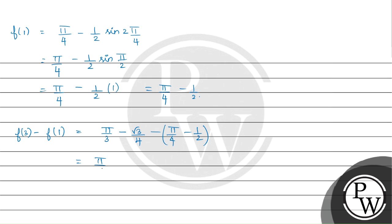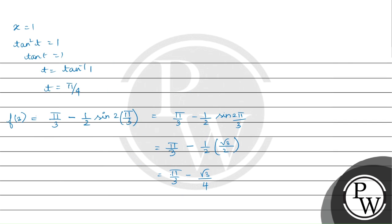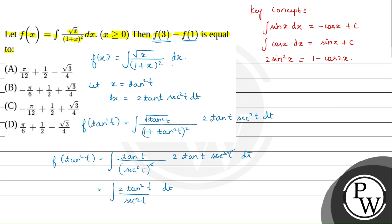Subtracting f of 1 from f of 3 and simplifying, we get pi by 12 plus 1 by 2 minus root 3 by 4. This is the final answer. Checking the options, option A is correct. Hope you understood the solution. Thank you Bacho.